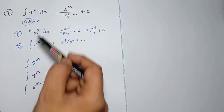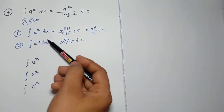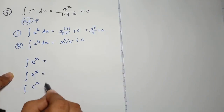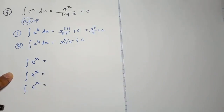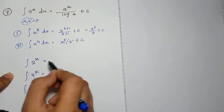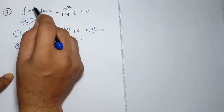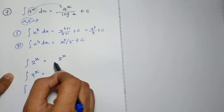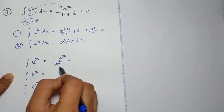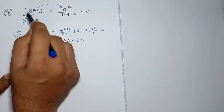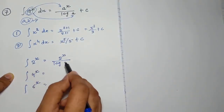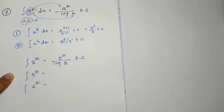So: a raised to x versus x raised to 2, 4, and so on — they are opposite. Rule number 7 is opposite to rule number 1. What will be the answer of 2 raised to x? First, write a raised to x as it is — so 2 raised to x as it is — and in division write log a. Here a means 2, so the answer is 2 raised to x divided by log 2 plus c.